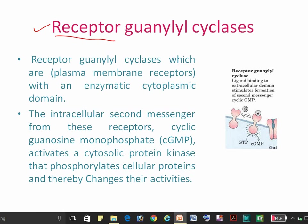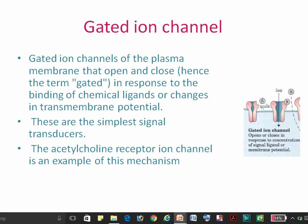The third one is the guanylyl cyclase receptor. In this type of receptor, a ligand binds to the extracellular domain of the receptor and stimulates the formation of the secondary messenger cGMP. This cGMP then activates a cytosolic protein kinase that phosphorylates cellular proteins.